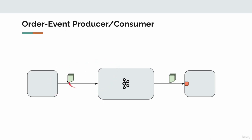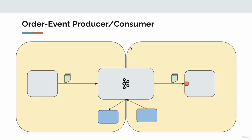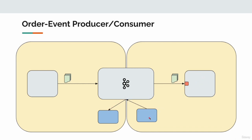We are going to test whether our order event producer application is working properly, and similarly whether our order event consumer is consuming events properly — that's what we are going to check with integration tests. For the producer test: the producer application produces events to the embedded Kafka, we consume those events in the test, and confirm the producer is working. For the consumer test: we produce events into the Kafka topic and see the consumer application receiving those events from embedded Kafka.